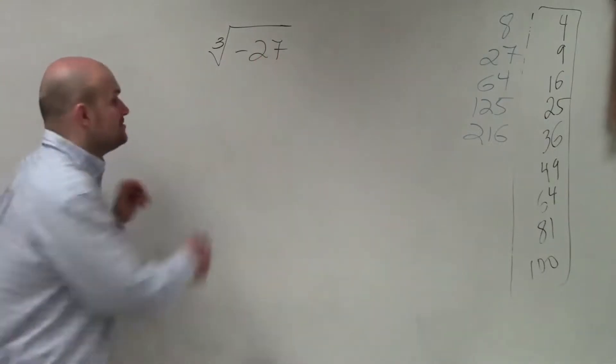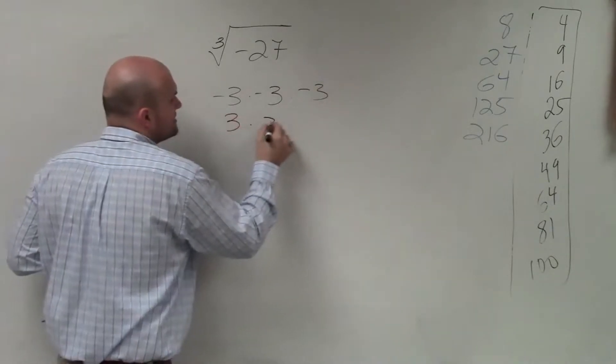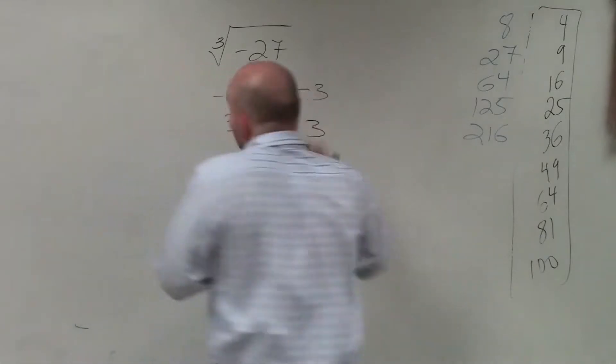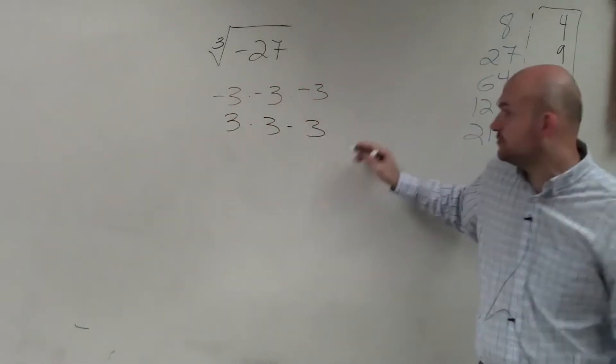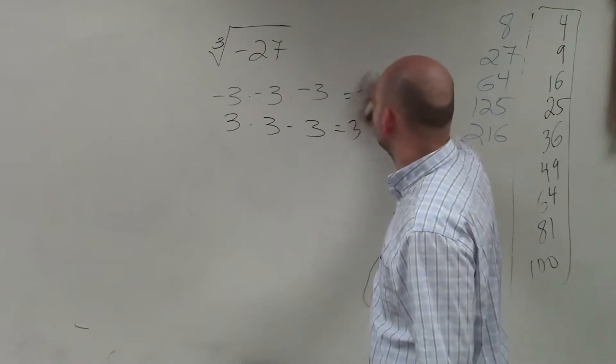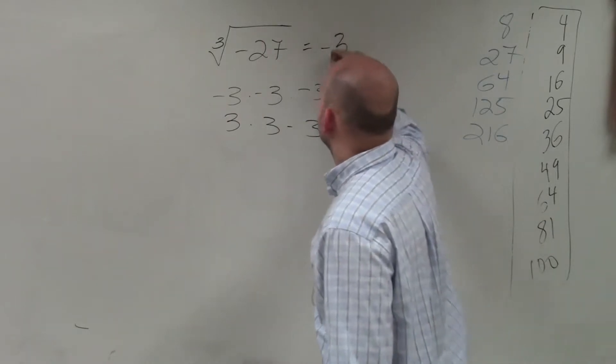Well, we only have two options. It's either negative 3 times negative 3 times negative 3, or 3 times 3 times 3. Right? And it has to be negative 3 because that gives you... and this is going to give you negative 27. So, therefore, ladies and gentlemen, a couple things I want to first talk about is talking about square roots versus cube roots.